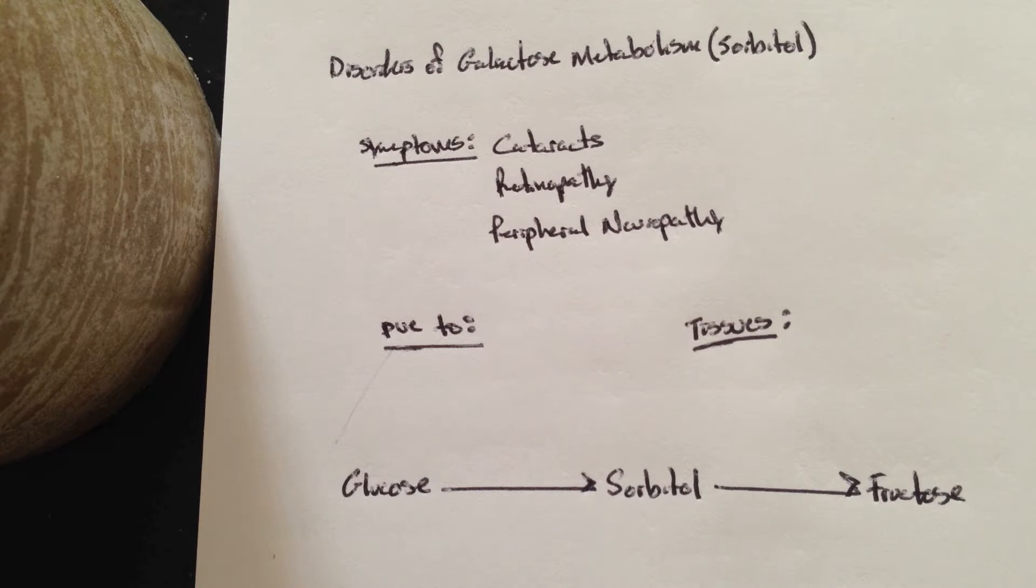So what it states is that an alternative method of trapping glucose in the cell is to convert it into sorbitol. The reason why this occurs is that certain tissues, such as the lens of the eyes, need sorbitol to create a more viscous material in order for the lens of the eye to function.